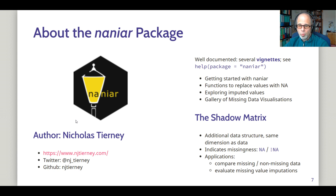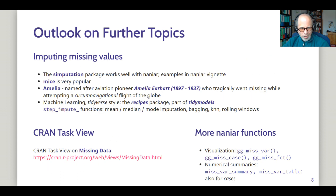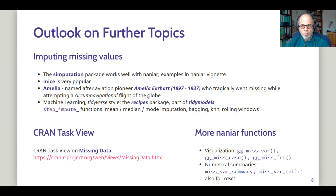You can also use the shadow matrix to evaluate the quality of your missing value imputations. An outlook on further topics: imputing missing values is a huge topic. The NANIAR package has several examples that highlight use of the simputation package, which works very well together with NANIAR — you'll find code examples in the NANIAR vignettes. But there are other packages for missing value imputation. For example, mice is very popular. There's a package called Amelia, which is named after the aviation pioneer Amelia Earhart, who tragically went missing while attempting a circumnavigational flight of the globe.